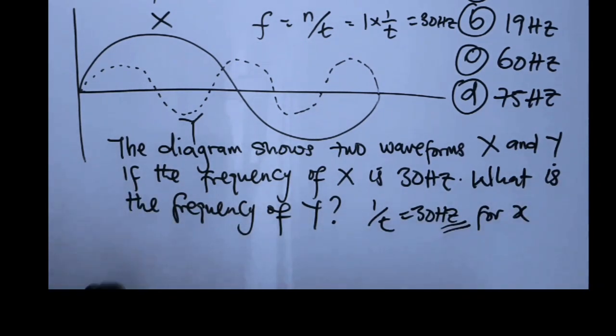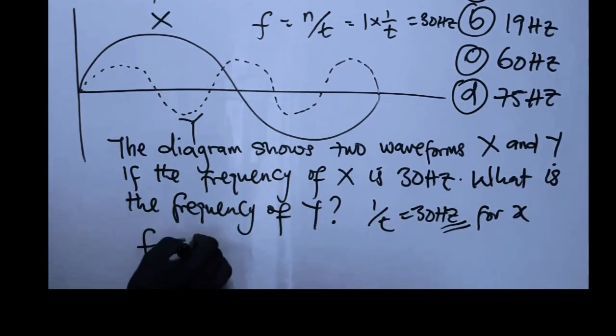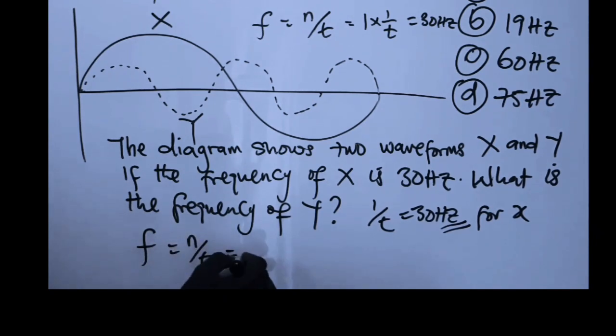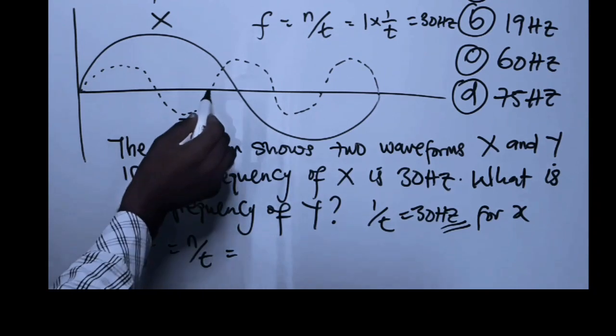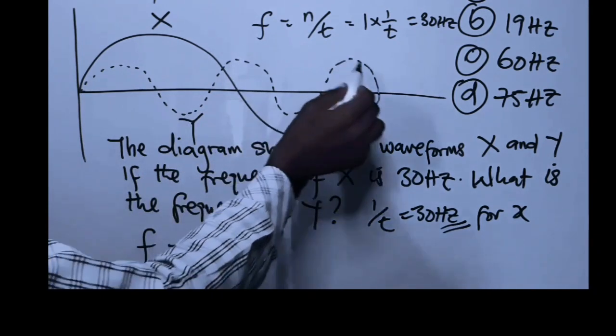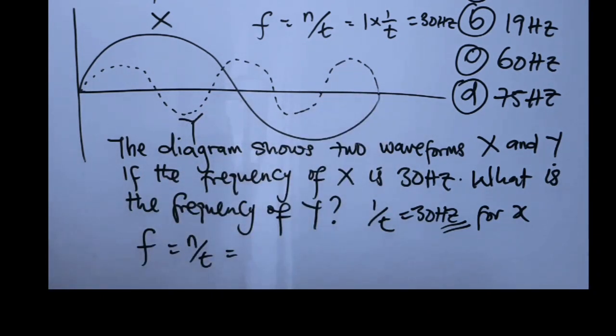Now for y. I will set my f equal to n over t. This time around, how many cycles do we have? This is one cycle, this is two cycles, two and a half cycles. And if you convert it to an improper fraction, you have 5 over 2. That means our n is 5 over 2.